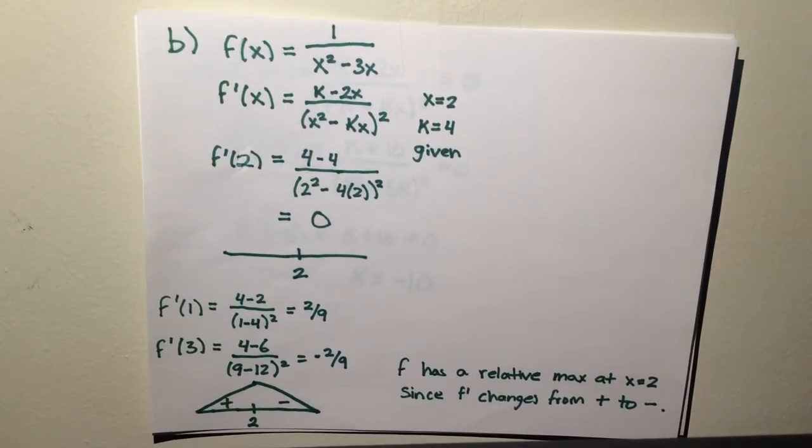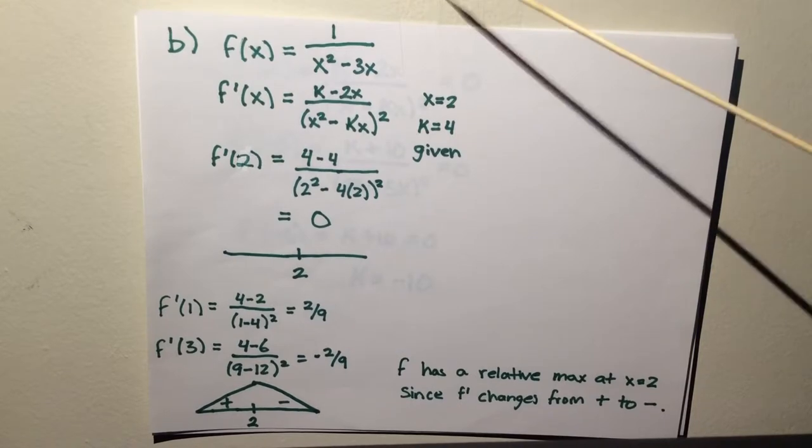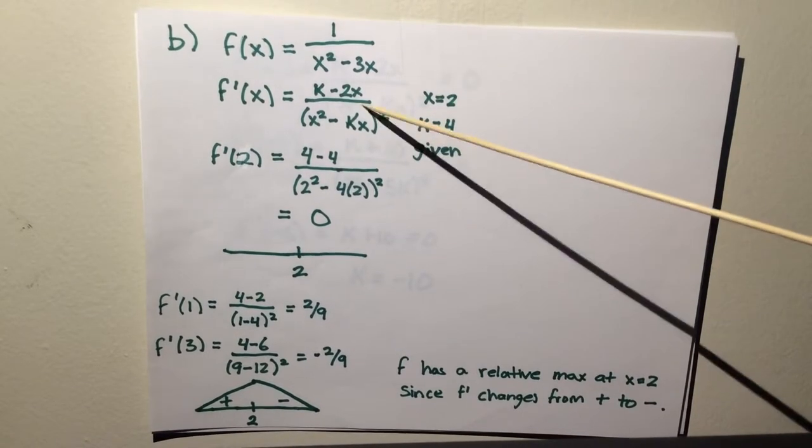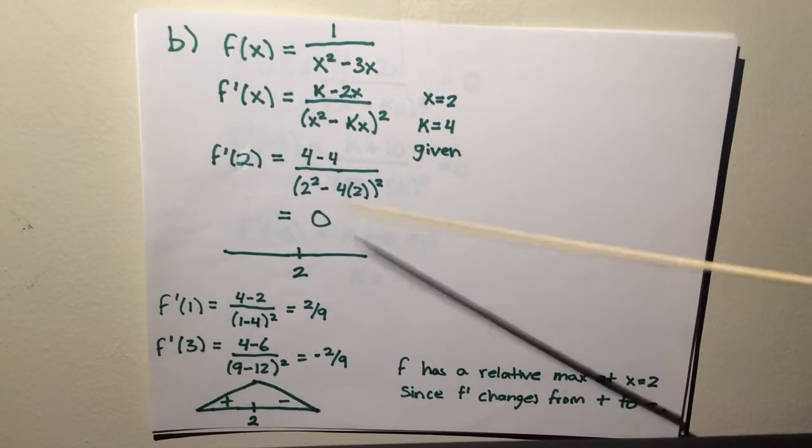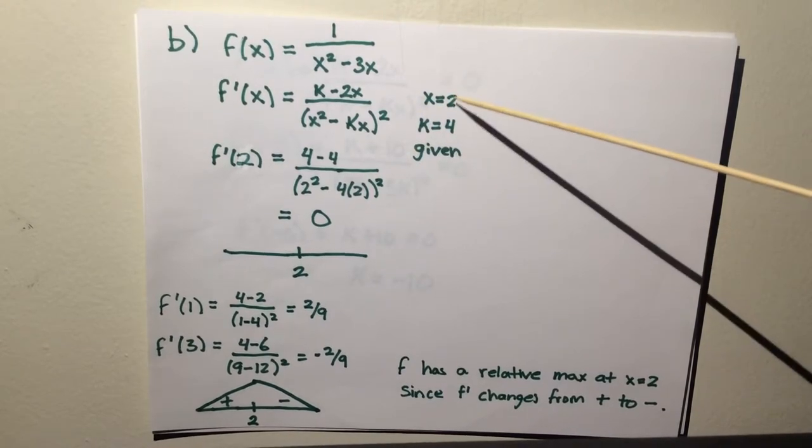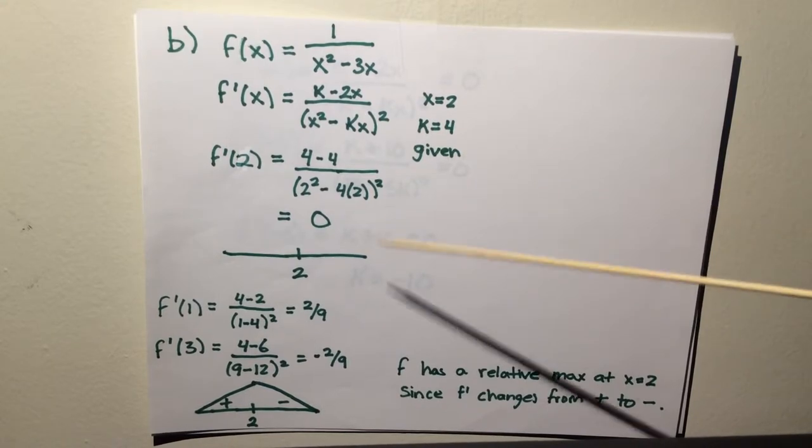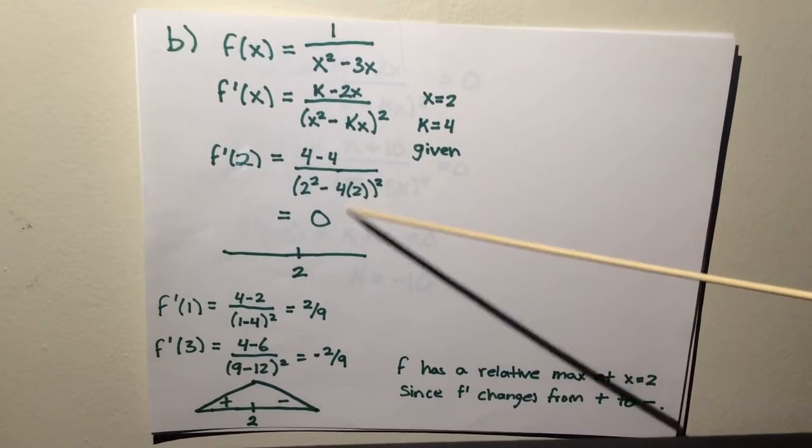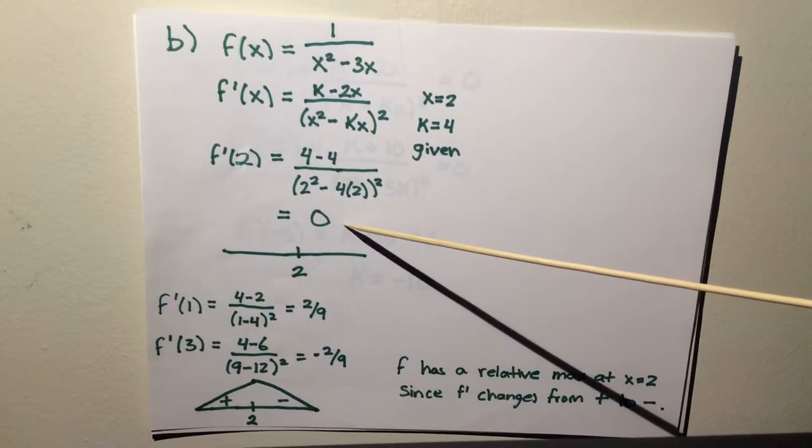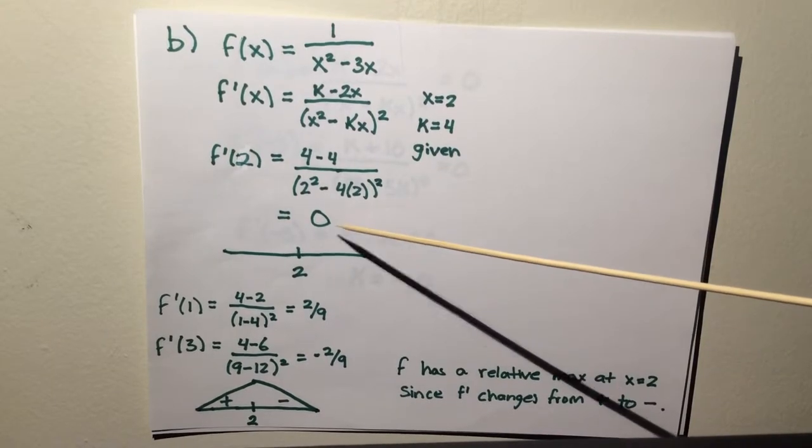To find a relative min or max, you must have the derivative, which was already given to you. You plug in x equals 2 and k equals 4, which was given by the directions. Once you solve for that, you get 0, which means now you need to solve for it.